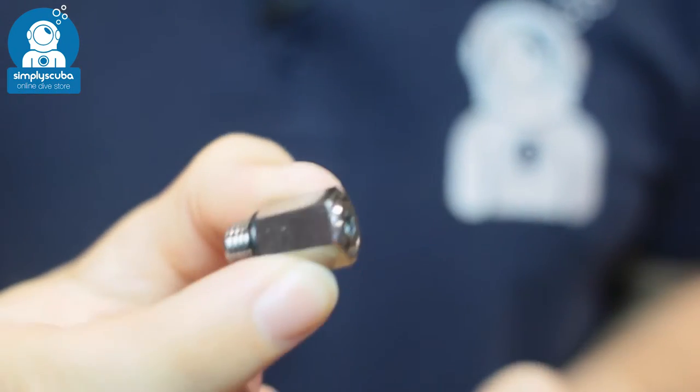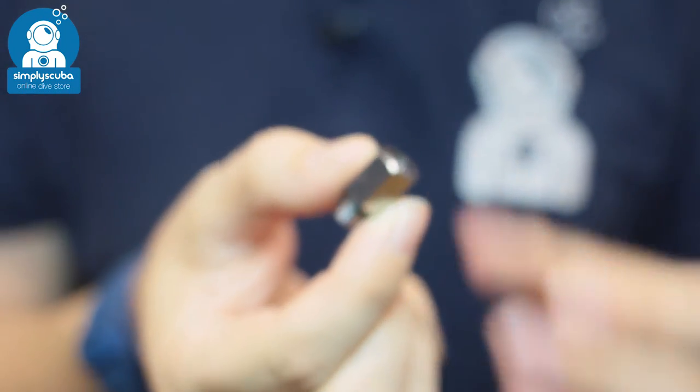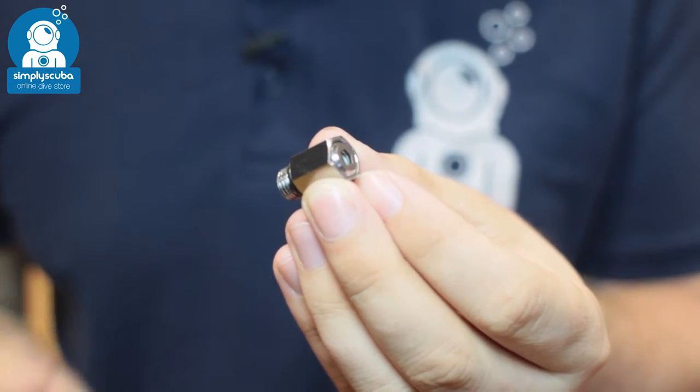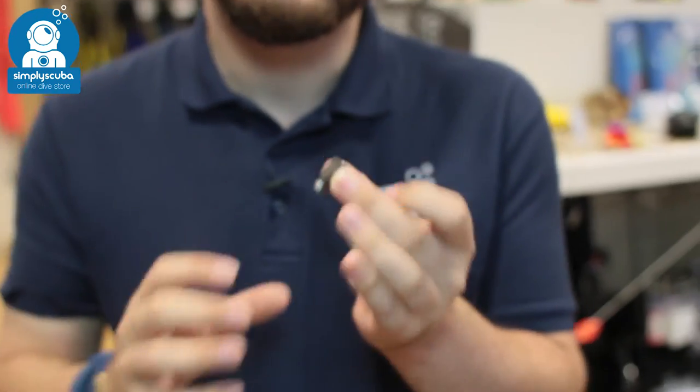That's going to screw into any sort of standard size low-pressure port and just act as an overpressure valve just in case that interstage pressure goes up. So nice compact little overpressure valve, very handy for an independent dry suit inflation cylinder.